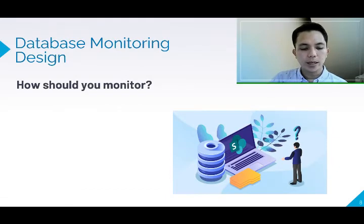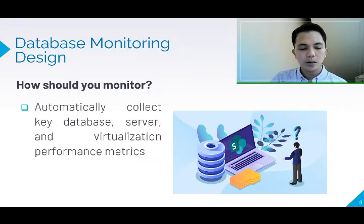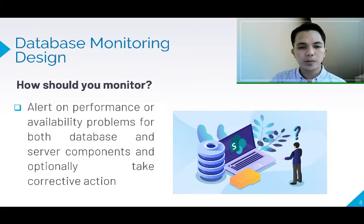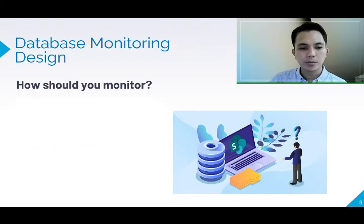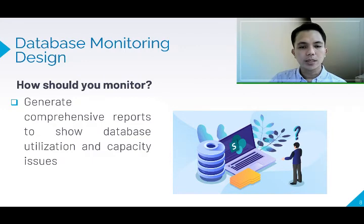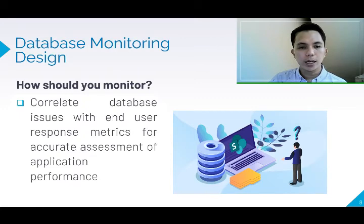The following outline is a list of items to take into account when implementing a database monitoring system. How should you monitor? 1. Automatically collect key database, server, and virtualization performance metrics. 2. Alert on performance or availability problems for both database and server components and optionally take corrective action. 3. Generate comprehensive reports to show database utilization and capacity issues. 4. Coordinate database issues with end-user response metrics for accurate assessment of application performance.